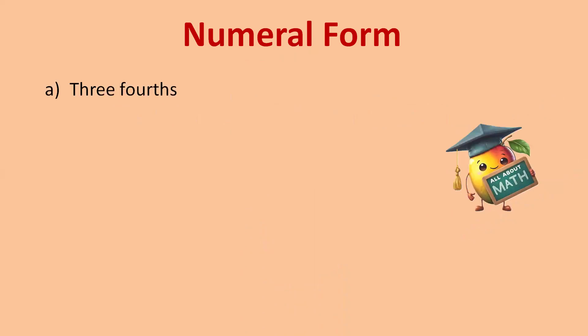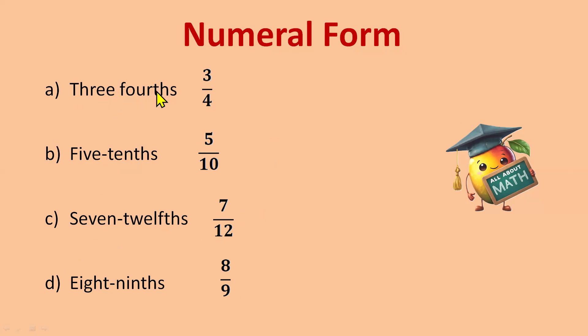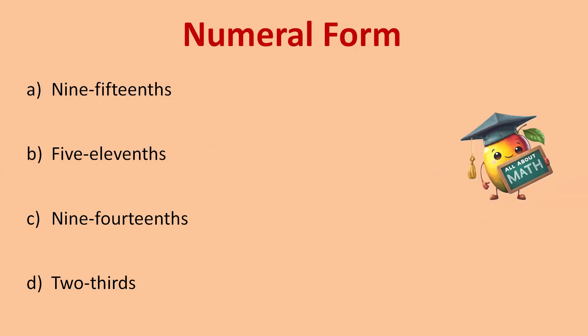For numeral form: 'three fourths' — three will be the numerator and fourths means four will be the denominator, so three by four. Next, 'five tens': five will be the numerator and ten will be the denominator. 'Seven twelves': seven will be the numerator and twelve will be the denominator. 'Eight nines': eight will be the numerator and nine will be the denominator. The numeral form is very easy — the first number is the numerator and the second number is the denominator.